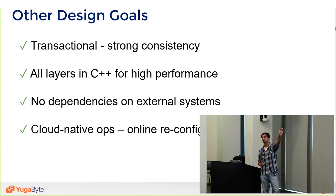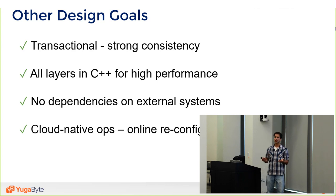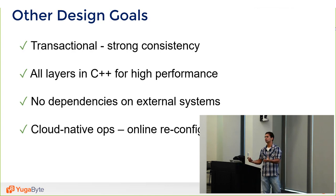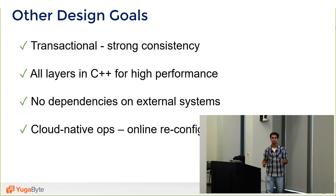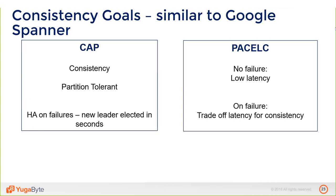Finally, we had to make it cloud-native. You should be able to change your machine type without taking downtime. YugaByte enables online changes — you can change machine types, geographies, add and remove zones all while your app is running with zero downtime.